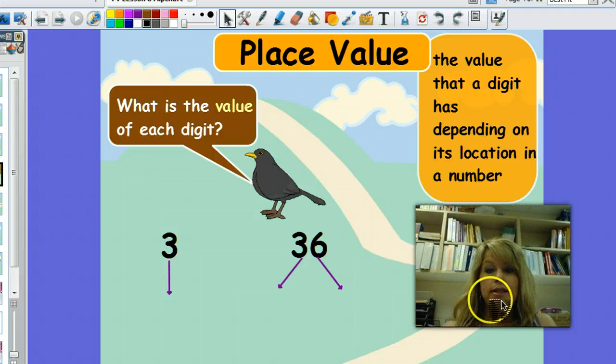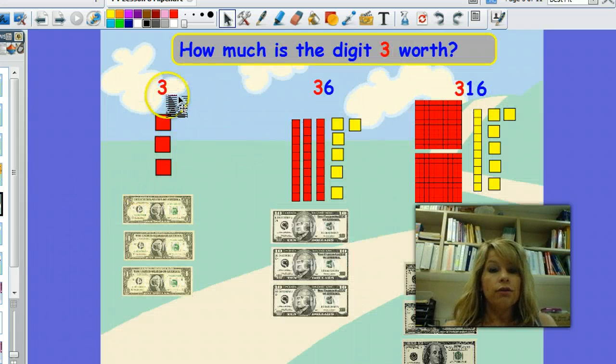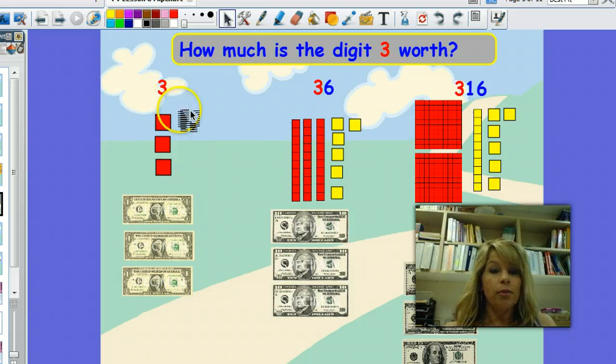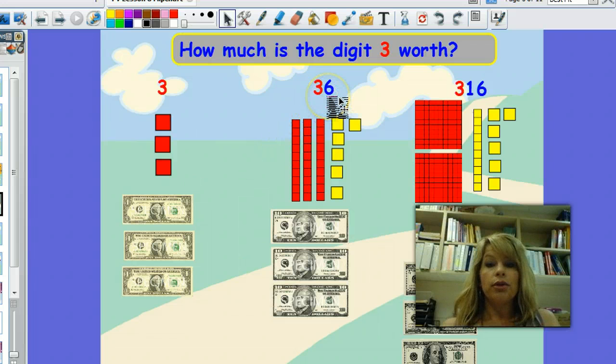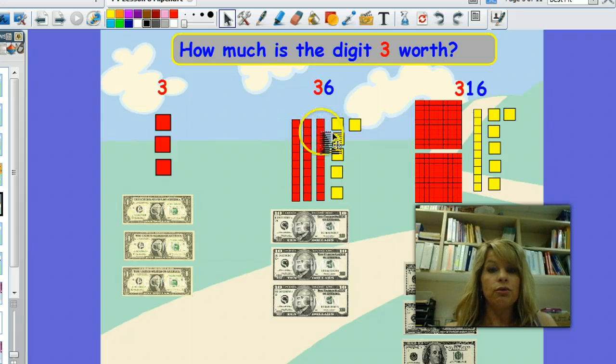The value that a digit has depends on its location in a number. So for 3, where it's at in the number is in the ones place, so the 3 in this number represents three ones. In this number 36, the 3 is in the tens place, so it is worth three tens, or 30. And in 316, the 3 is in the hundreds place, so it is worth three hundreds, or 300.